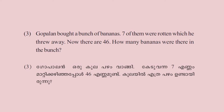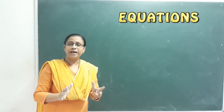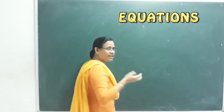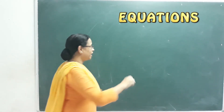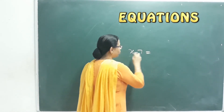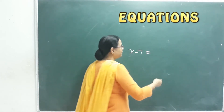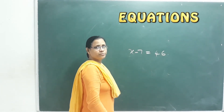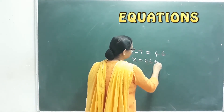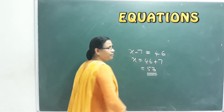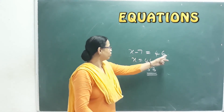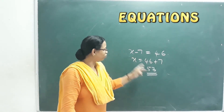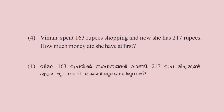Next question: Gowbalan bought a bunch of bananas. Seven of them were rotten, which he threw away. Now there are 46 remaining. How many bananas were there in the bunch? We let x be the total bananas. x minus 7 equals 46. So x is equal to 46 plus 7, that means 53 bananas total.